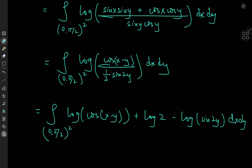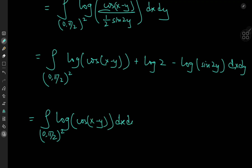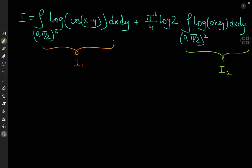Now let's make use of the linearity of the integration operator and write this as the double integral over the region zero to π/2 squared of log cosine(x − y) dx dy. And this log 2 term is just a constant, so we would have log 2 times π²/4, minus another double integral over zero to π/2 squared of log sine 2y, dx dy.